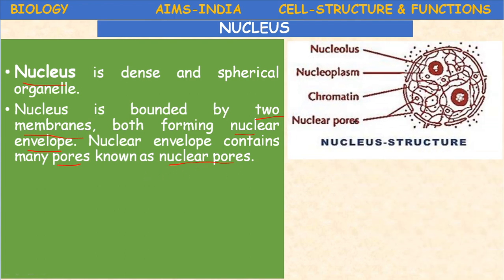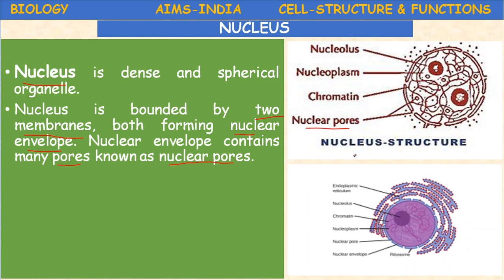The nuclear envelope is a double membrane. It possesses pores — gaps called nuclear pores. This is the nucleus; the nuclear envelope is the outer double-layered membrane surrounding the nucleus.